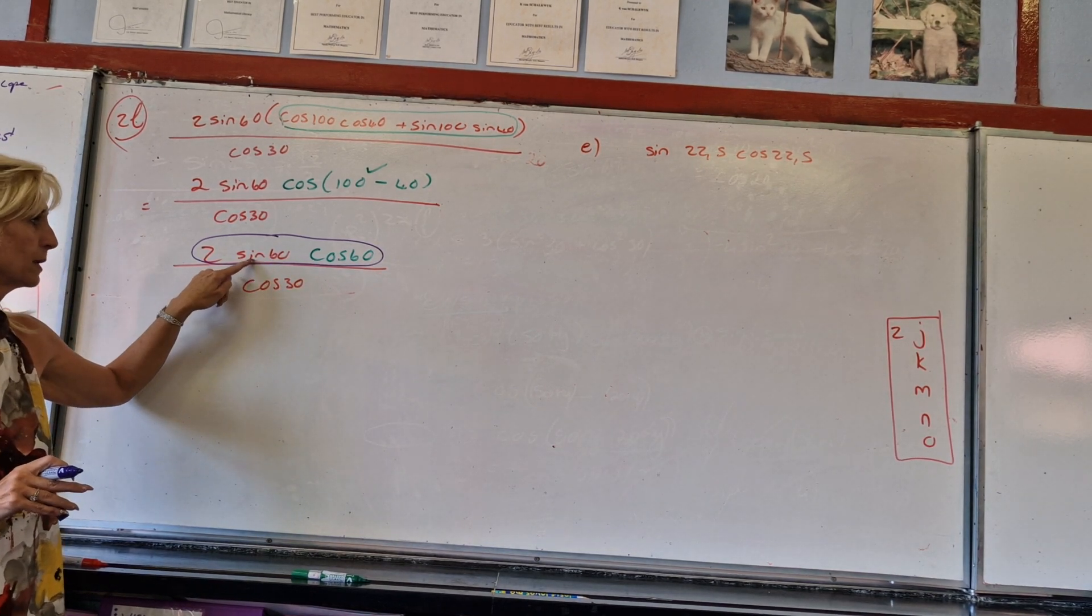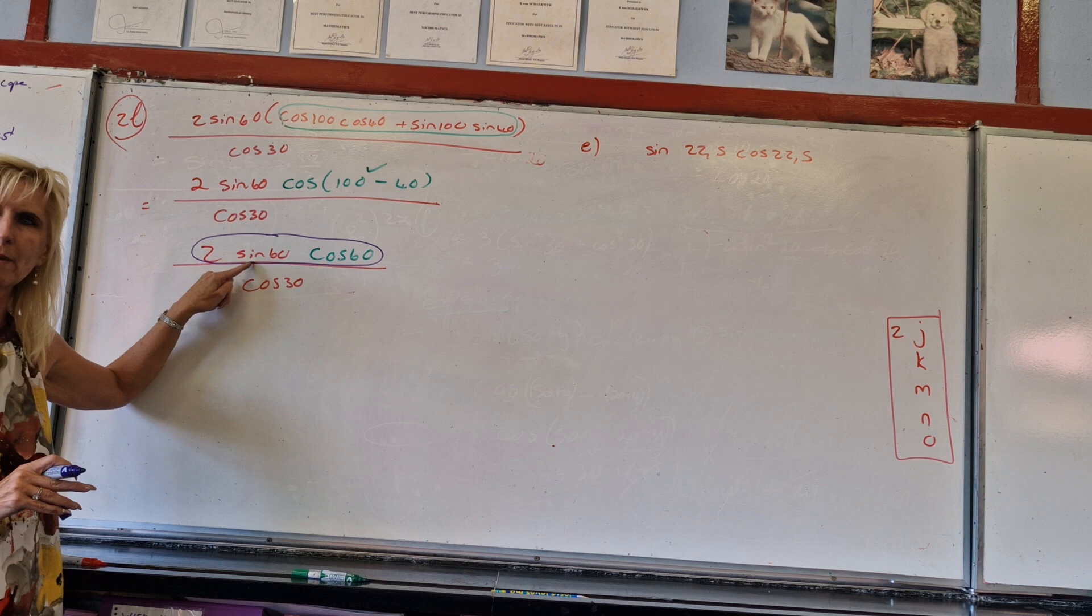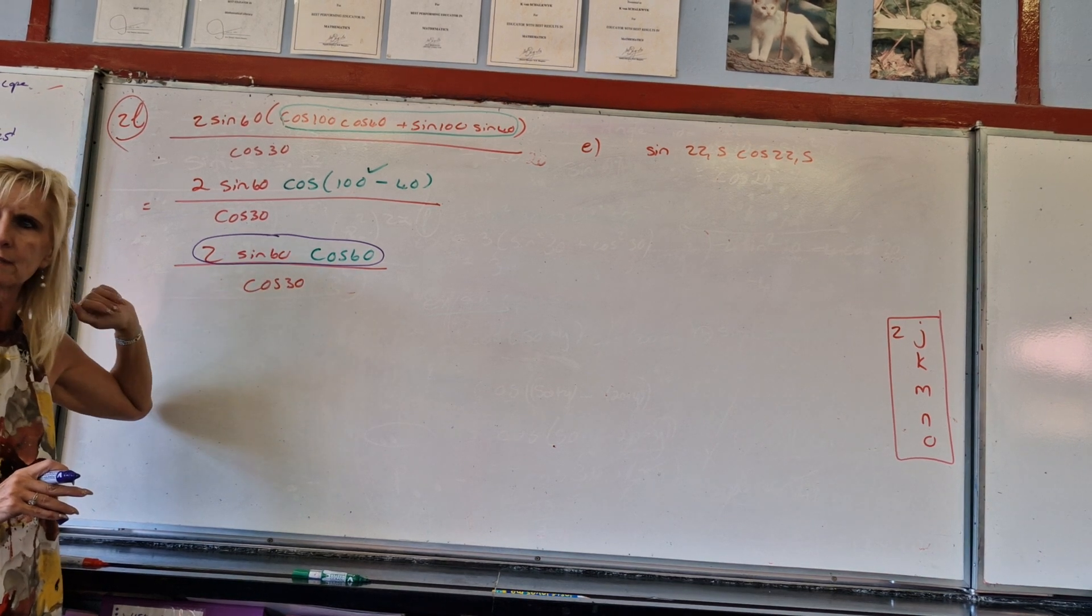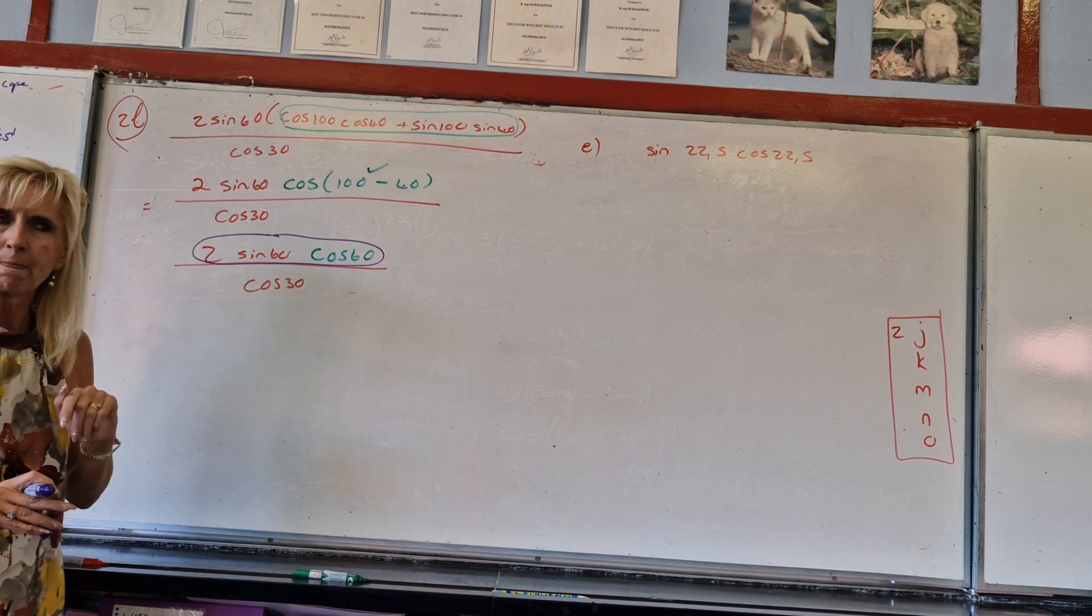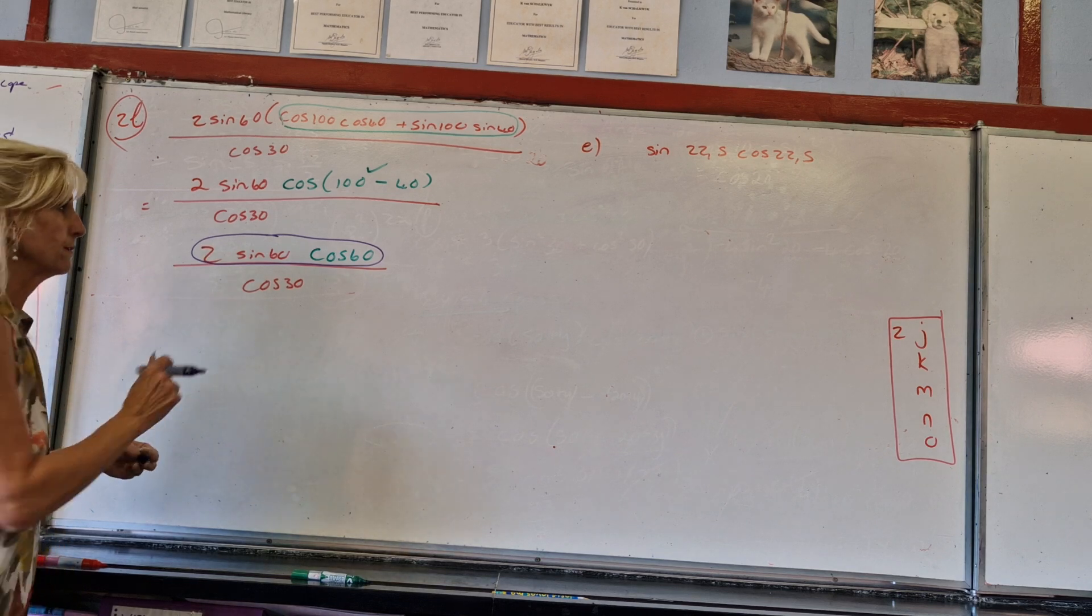Because I heard co-functions being spoken here. Couldn't I have done co-functions here? You could. And then sin 30 would become cos, oh, sin 60 would become cos 30 and boom, gone, is it? Perfect. But the person who saw this would have said that.